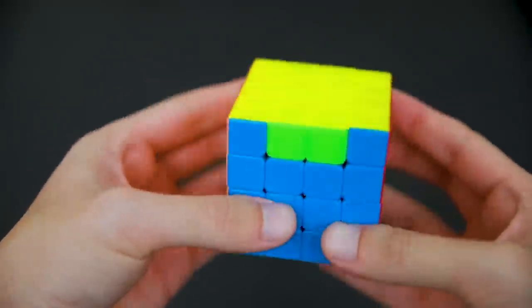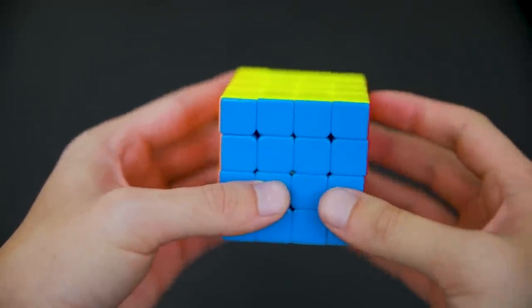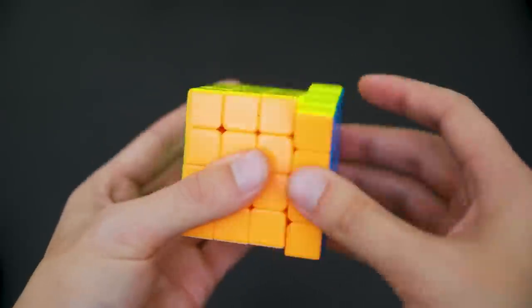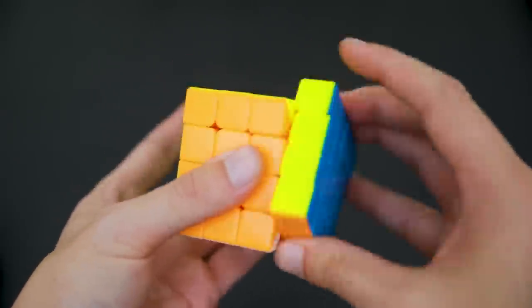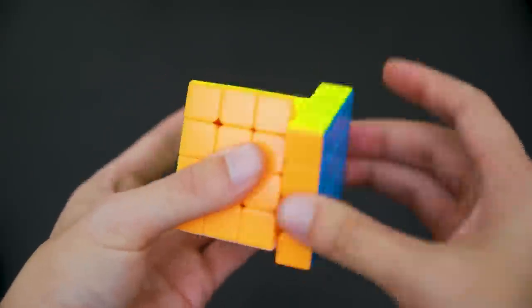This is a great benefit as the Wuque requires magnetization and extensive setup to perform at a highly competitive level. Compared to the Wuque, the Aosu GTS2M feels a bit blockier and is slightly more stable. The stability and the cube's quick speed make the Aosu GTS2M nicely competitive with the Wuque.